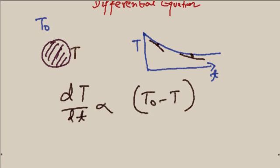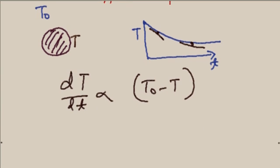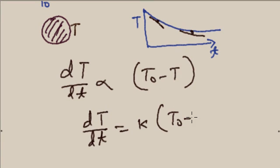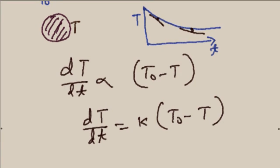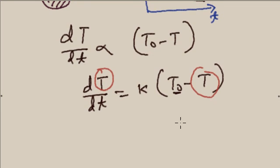That is, T₀ minus T. Here you can see it is an increasing term and the slope is also negative. If you remove the proportional sign, this equation can be written as: differentiation of temperature with respect to time is equal to K into (T₀ minus T). Here T₀ is a constant and the variable is T. So here is the first equation Newton got.